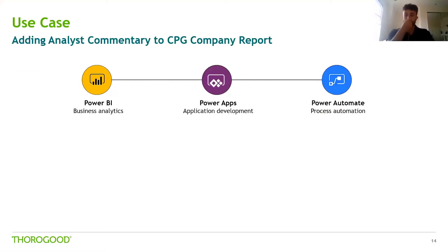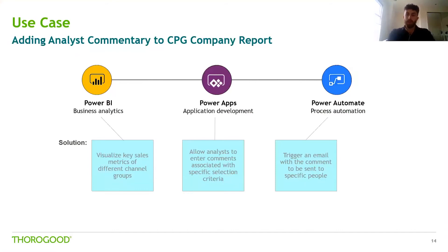The first demo we're going to cover uses an integrated combination of Power BI, PowerApps, and Power Automate to build a powerful report for a CPG company. Power BI will be the main reporting tool used to visualize and analyze the key sales metrics of different channel groups. PowerApps will be integrated within Power BI, allowing analysts to enter comments associated with specific selection criteria. And finally, Power Automate will be integrated within the Power App to trigger an email to be sent to specific people with the commentary added.